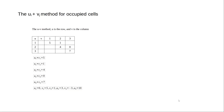We use the u plus v method for the occupied cells. This is also known as the dual variable method, where u is one variable and v is the other. Applying it to the occupied cells, we get: u1 + v1 = 5, u1 + v2 = 1, u2 + v2 = 4, u2 + v3 = 0, and u3 + v3 = 7. We then solve this resulting set of equations.